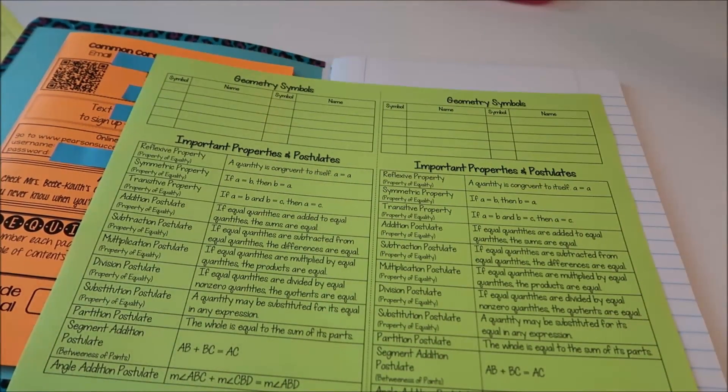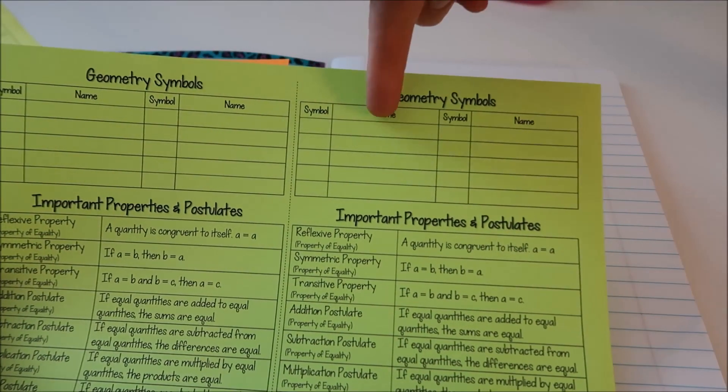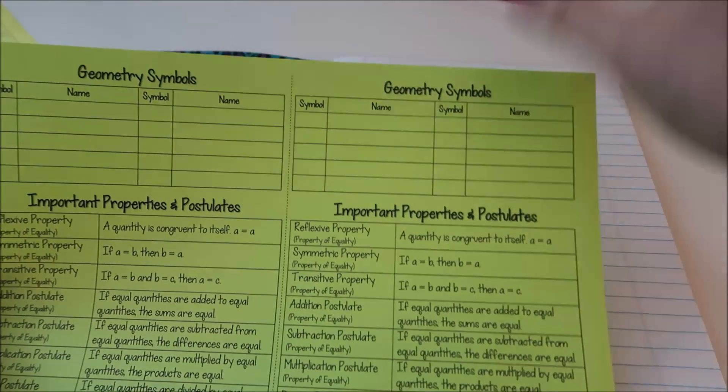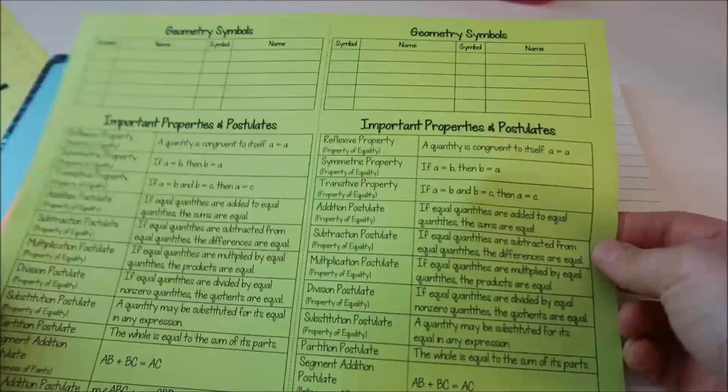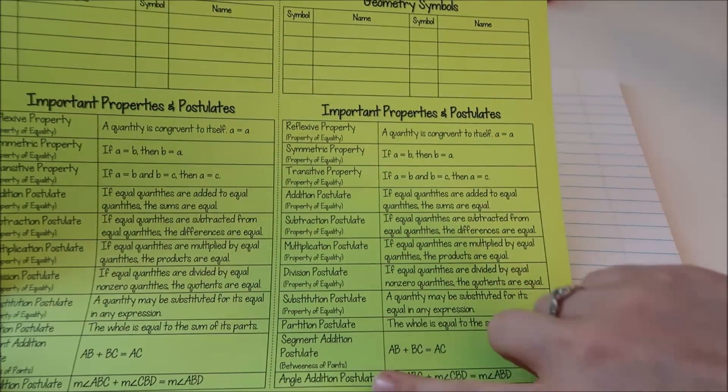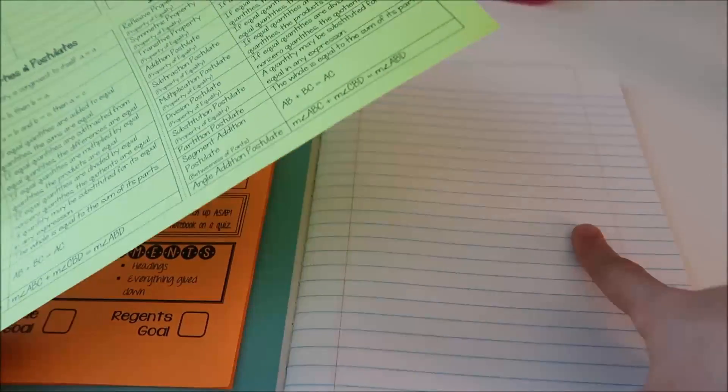The next page that I have is my geometry symbols page. I have the symbol that they write in here, the name of the symbol. There's 10 major ones that we'll go over throughout the year that they put in their notes. And then I have the basic properties and postulates that students need to know for proofs. So this goes in the very first page.